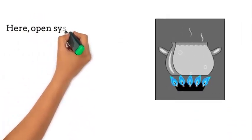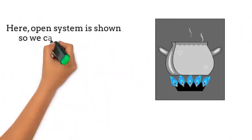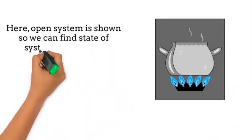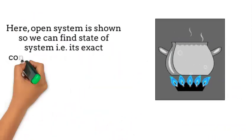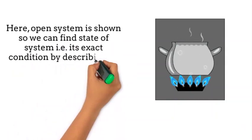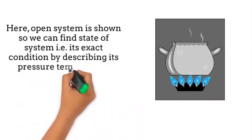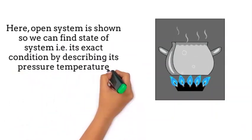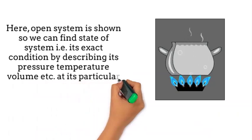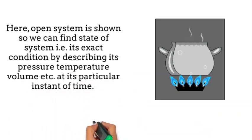Here, an open system is shown, so we can find the state of the system — that is, its exact condition — by describing its properties like pressure, temperature, volume, etc., at a particular instant of time.